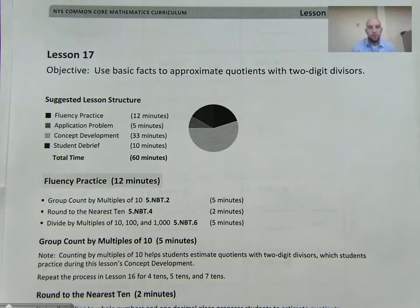Hello, everyone. This is Mr. Kissinger with the Citizenship Academy in Syracuse, New York. Today, we are doing fifth grade math module two, lessons 17 and 18. Our page here just says 17, but they both involve using basic facts to approximate quotients with two-digit divisors. So we're going to put them into one video here.